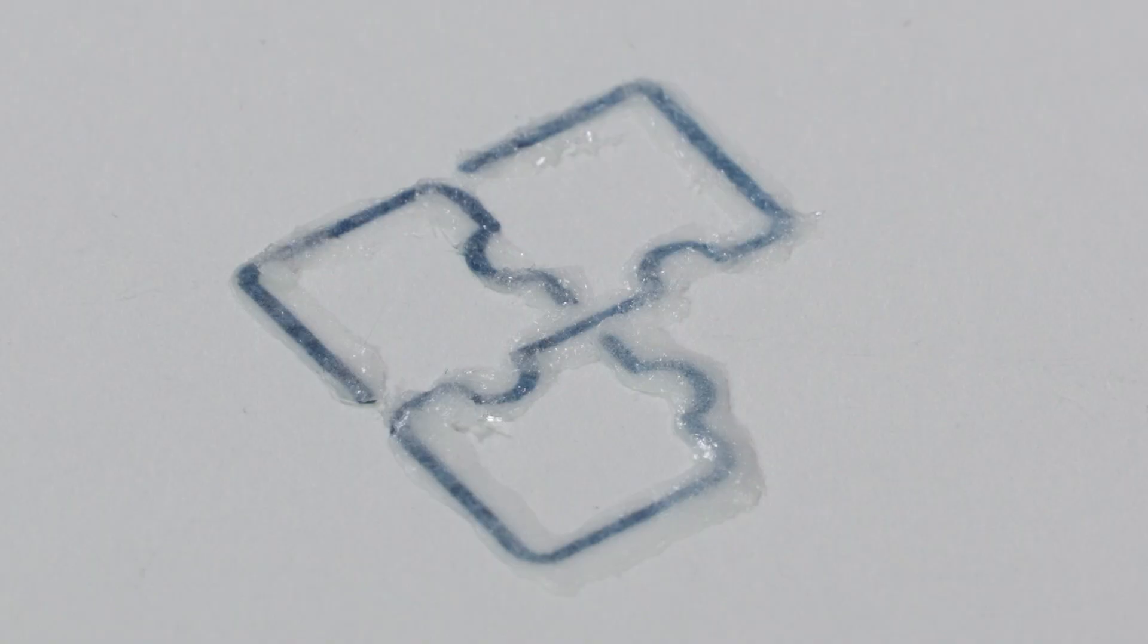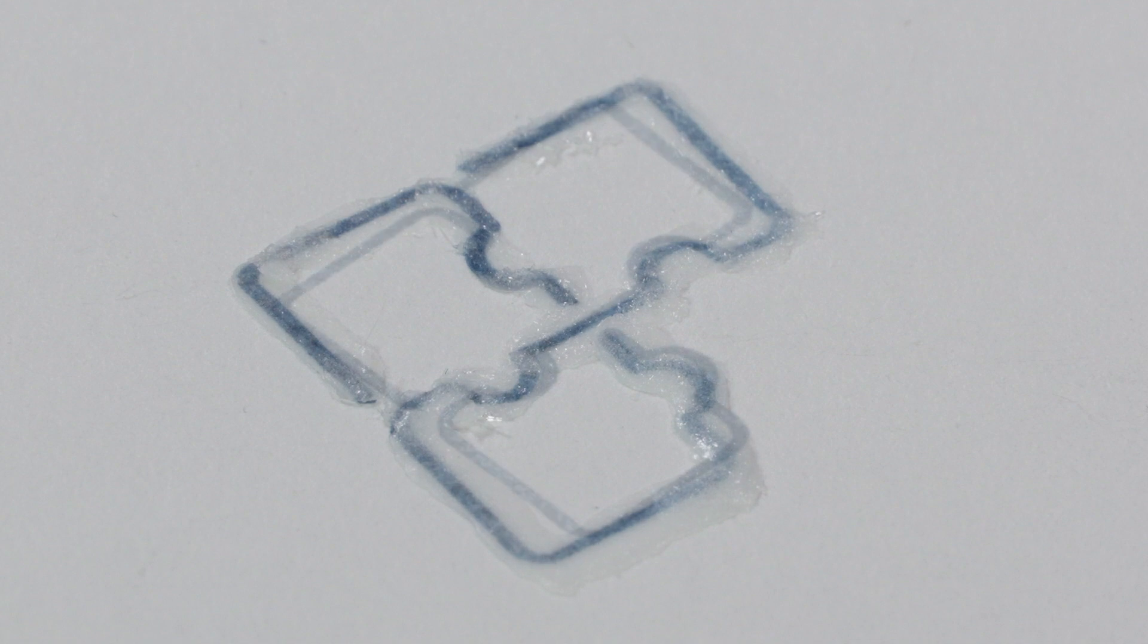After the treatment, the volatile binders sublimate without residue. This means that they pass from a solid state directly into a gaseous state and are not removed from the object by further interventions.